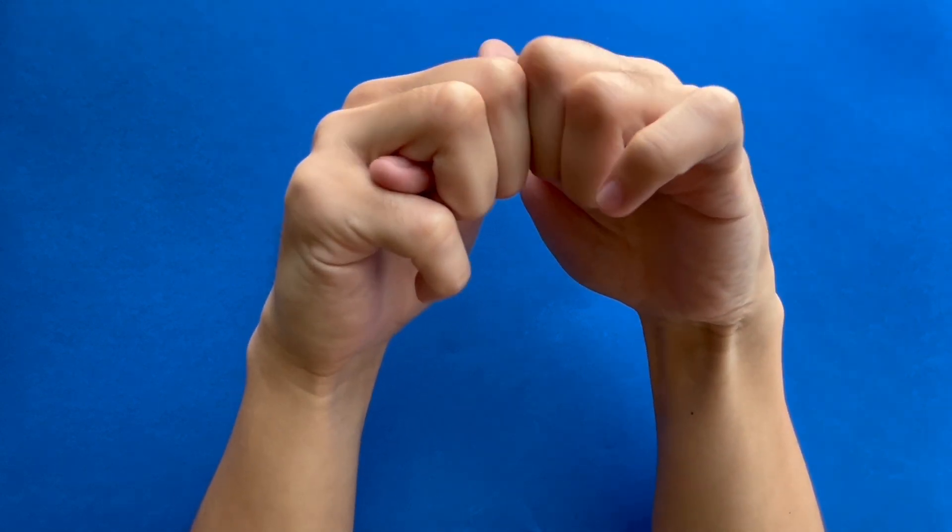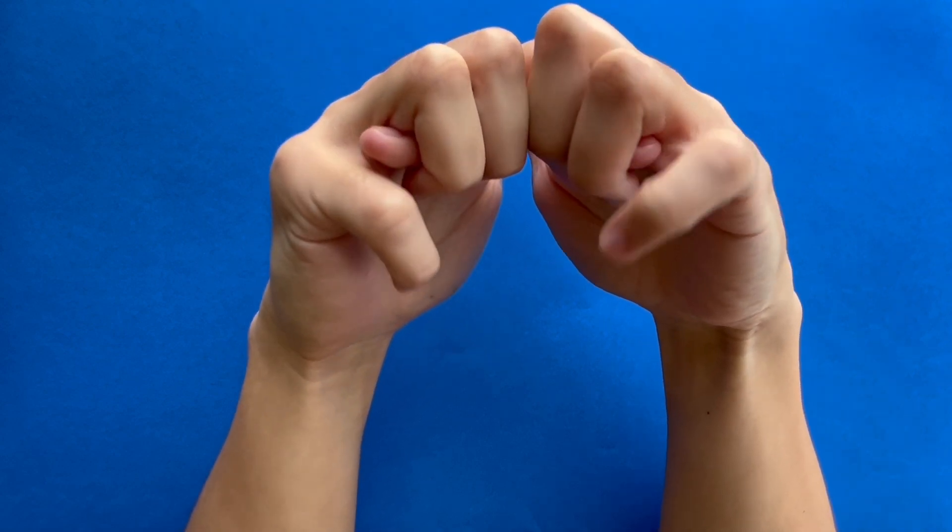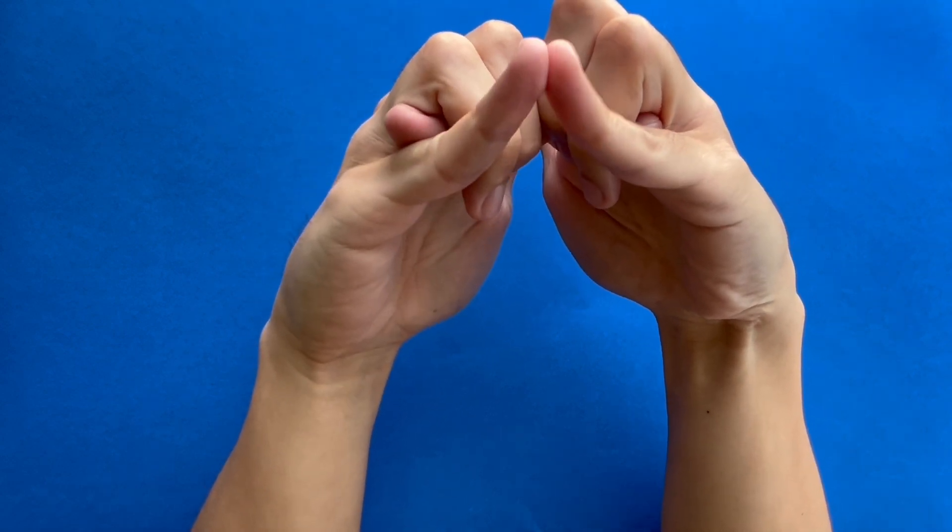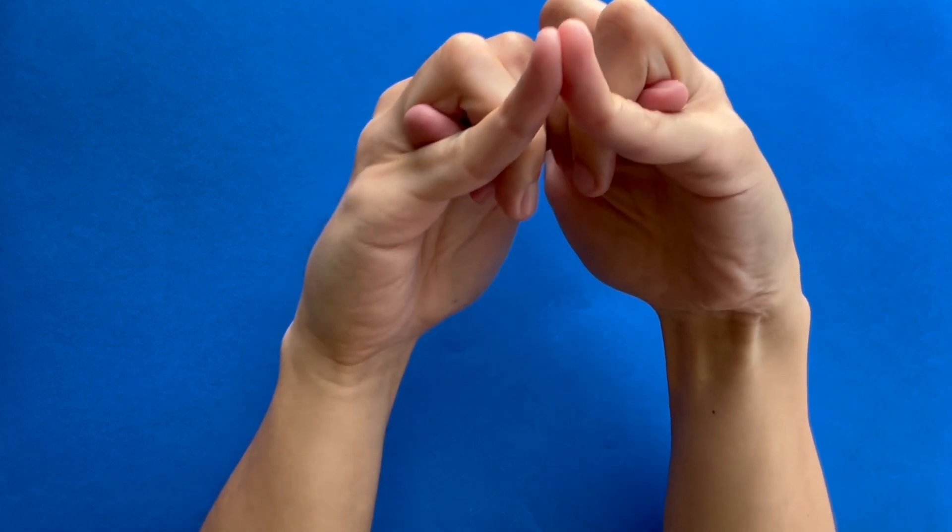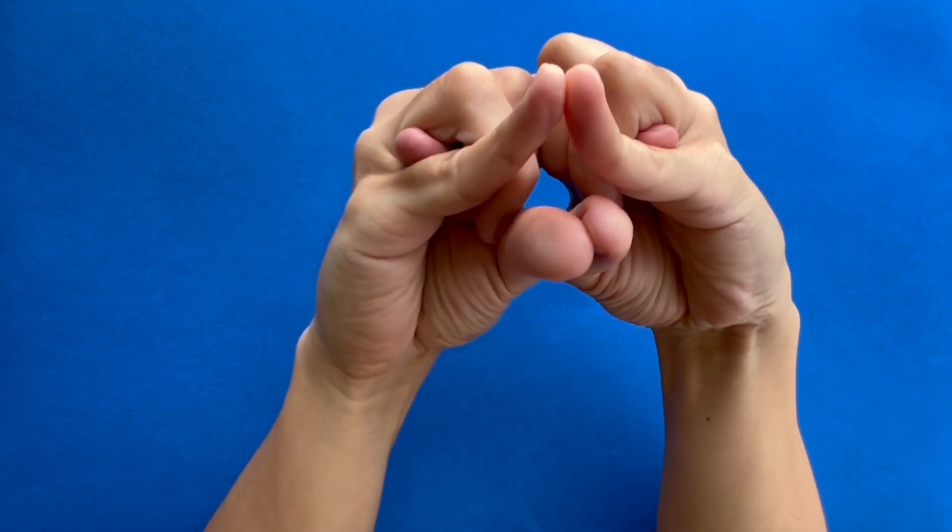Then take both the middle and ring fingers of each hand and wrap them around the pointer finger of each opposite hand. Then take your pinkies and touch the tips together—this forms the top of the beak.